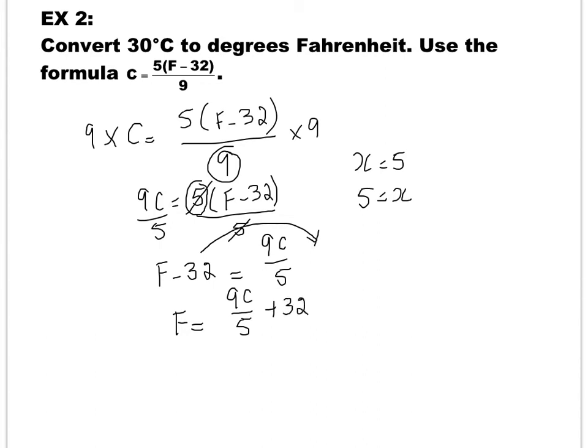Now to find the Fahrenheit equivalent to 30 degrees Celsius, I am going to sub 30 in this formula and then solve and simplify. If you simplify this one, F becomes 270 divided by 5 plus 32, which is approximately equal to 86 degrees Fahrenheit.